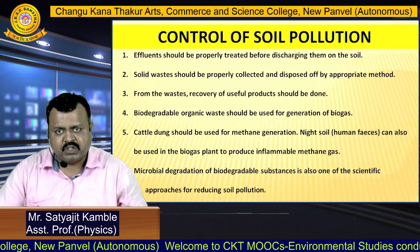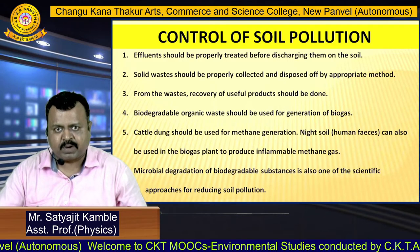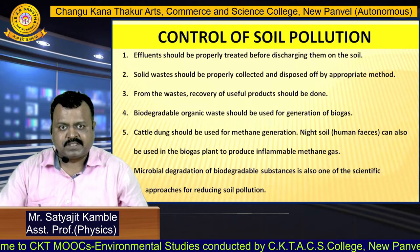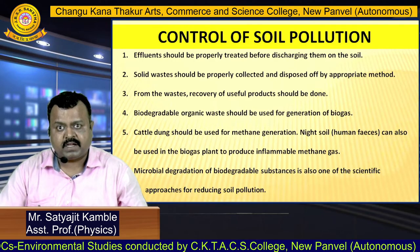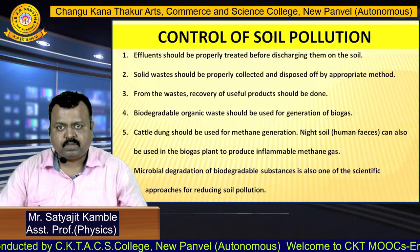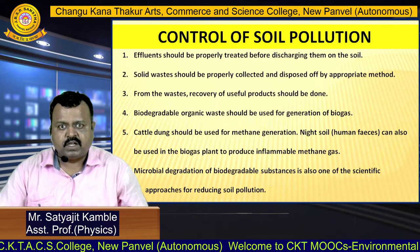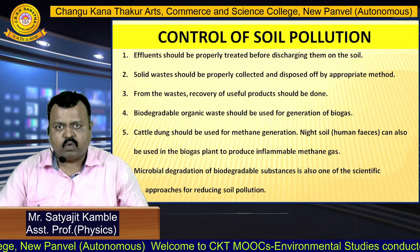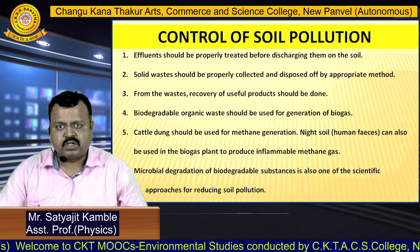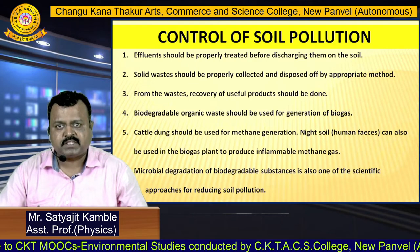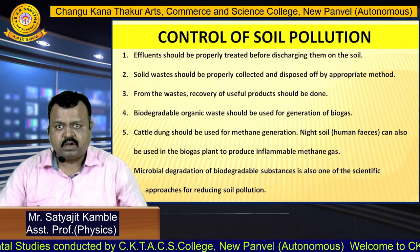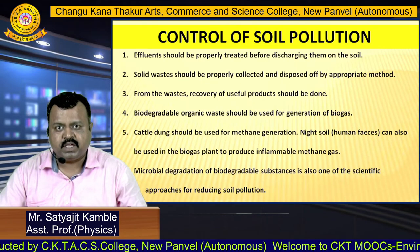We can control soil pollution by using effluents properly — effluents should be discharged only after a treatment process. Solid waste should be properly collected and disposed of; it should not be thrown anywhere. Useful substances should be created from waste, and we should try to avoid dumping of waste as much as possible. Biodegradable waste can definitely be used for compost or for biogas manufacturing. Cattle dung should be used for biomethane regeneration. We can also degrade biodegradable substances by using microbes.